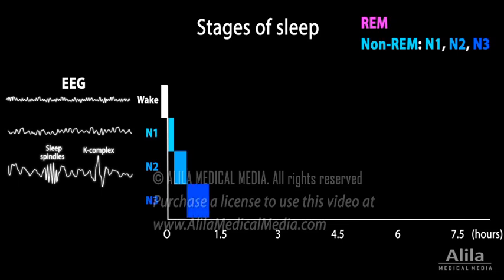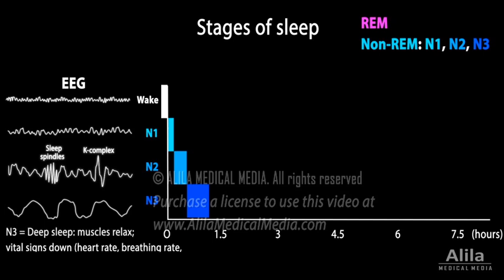N3 is deeper than N2. Slow delta waves dominate, muscles relax, vital signs are at their lowest, and it is difficult to wake the sleeper. N3 is typically followed by a transition to N2 before REM sleep occurs.